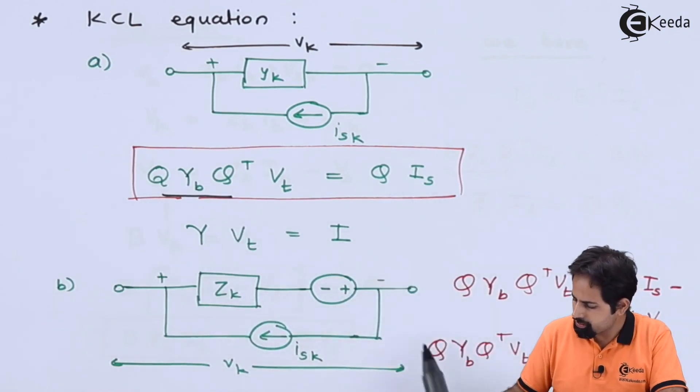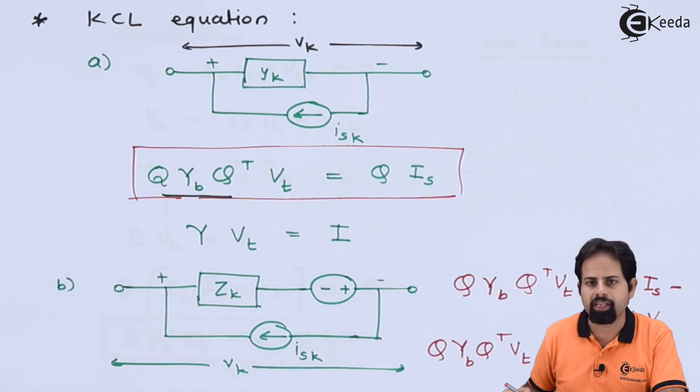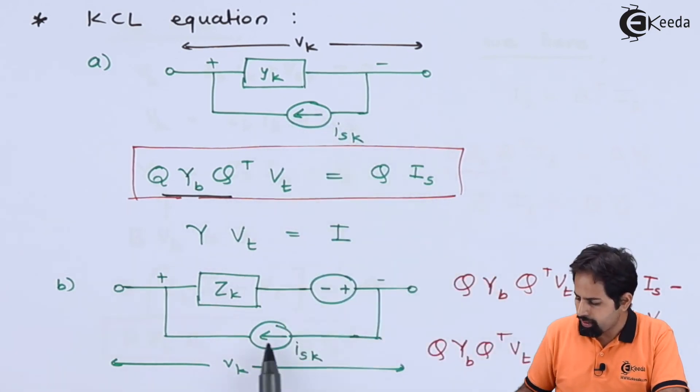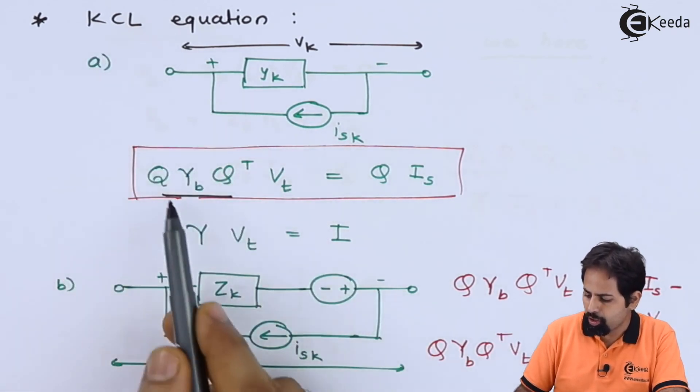This one and here this one. Here you can say equal to this equation. Here you can see there is a current source in parallel. Here also there is a current source in parallel. Whenever there is KCL equation, we are using Q.